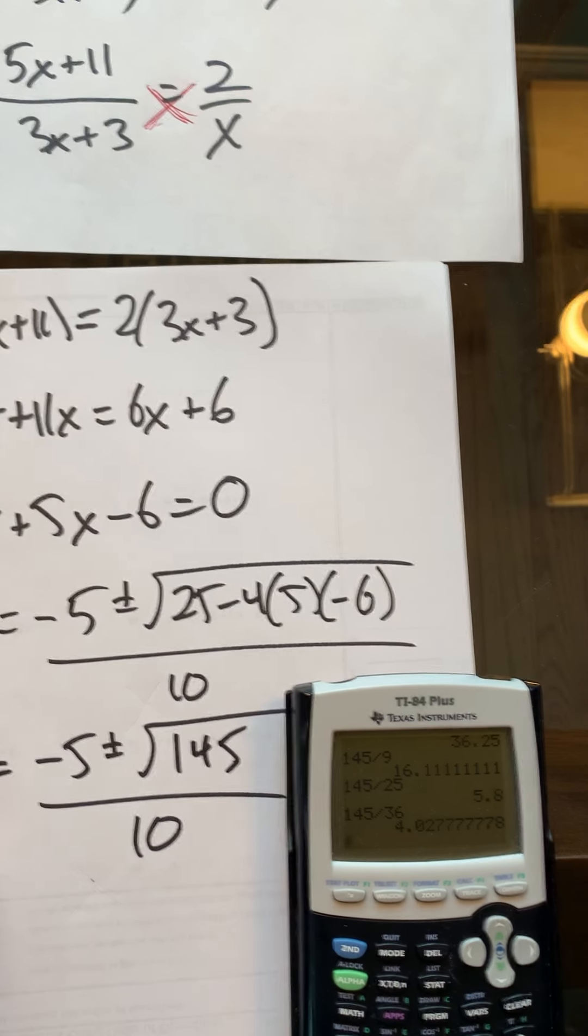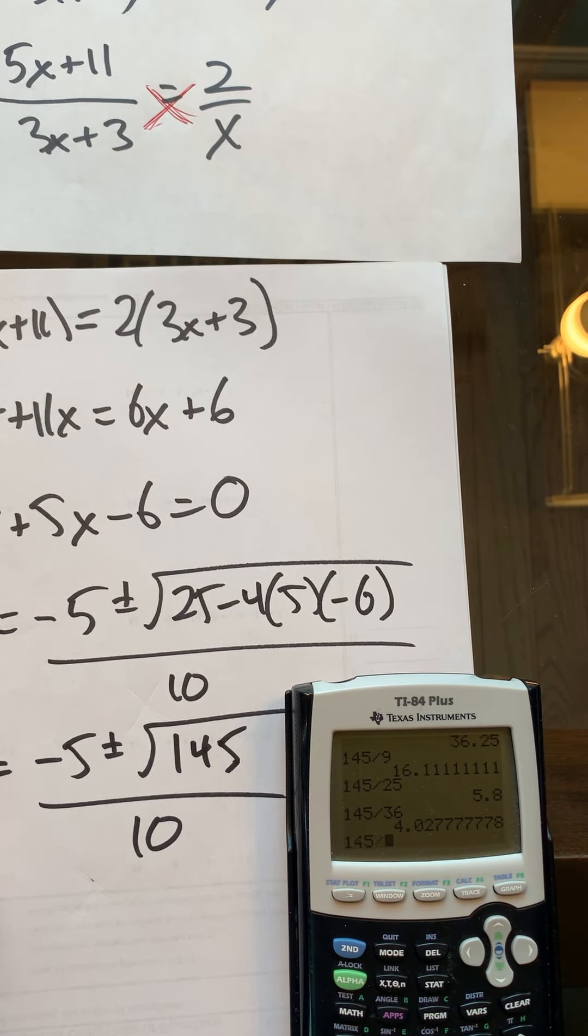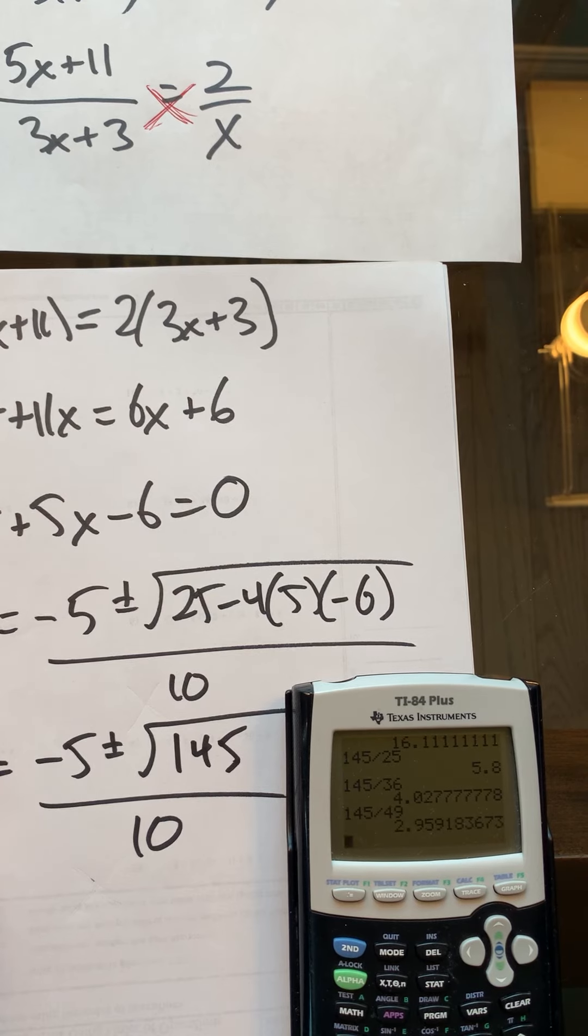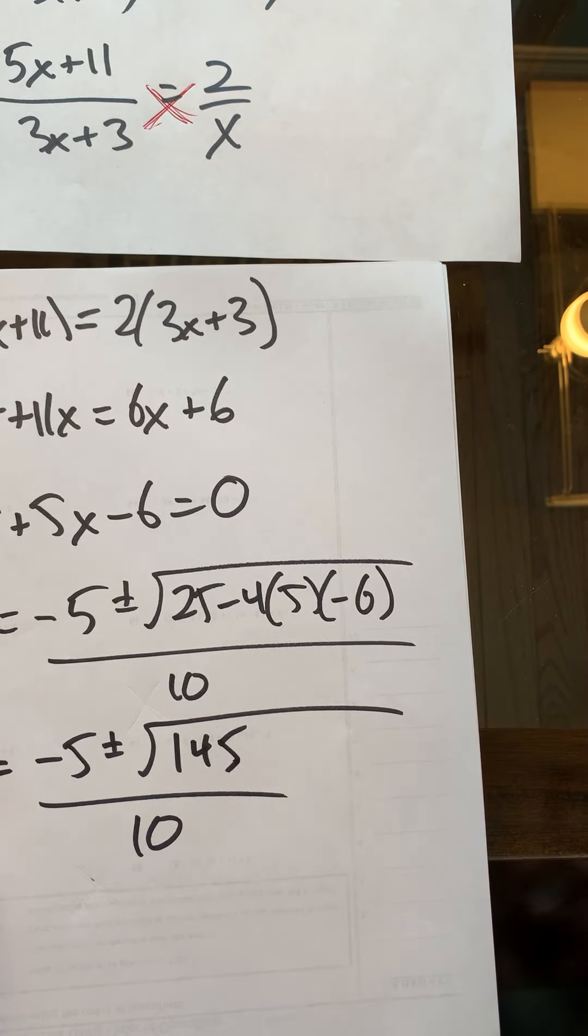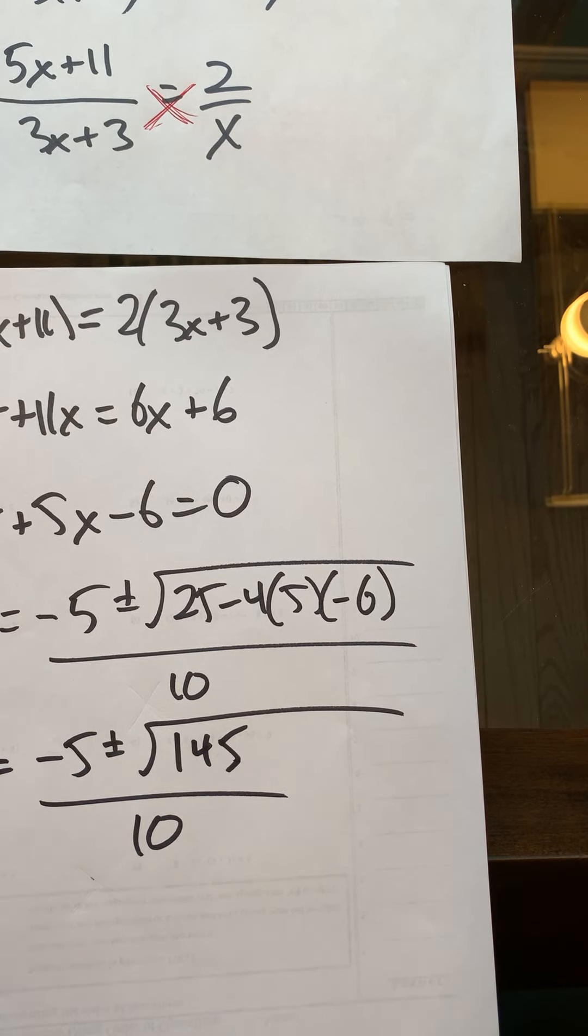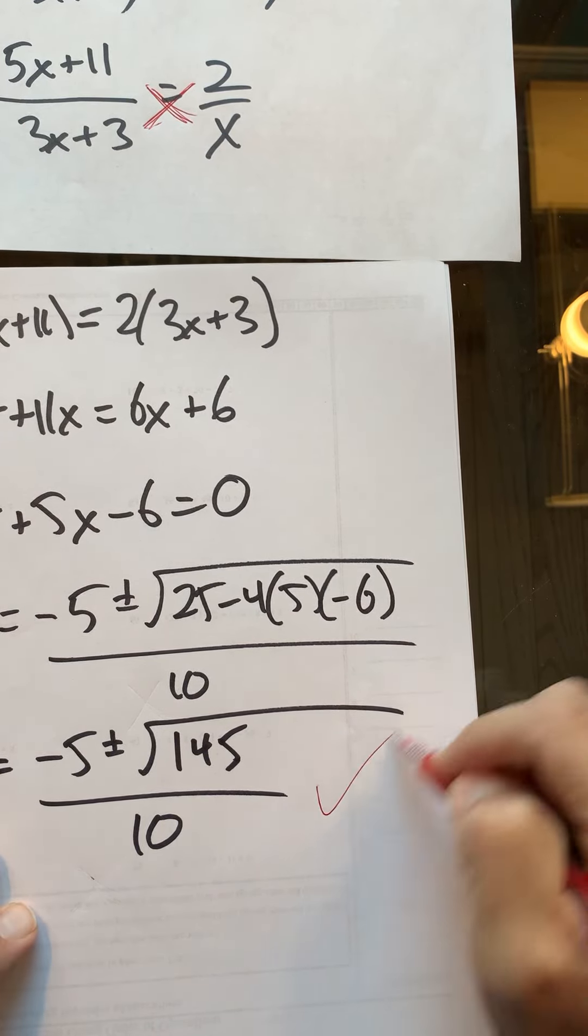Eventually you're going to realize it's not going to happen. 145 ÷ 36 is pretty close. There's no way 49 is going to work. You realize it's not going to be able to break down, so because we can't break it down and we like our expressions in exact form, we just stop there.